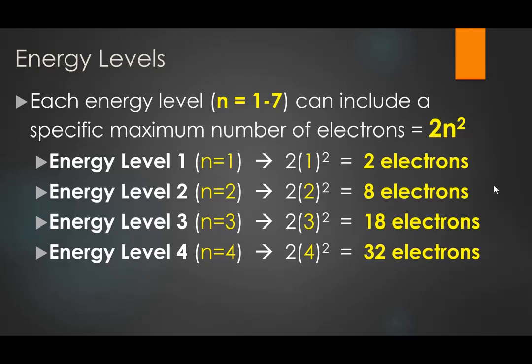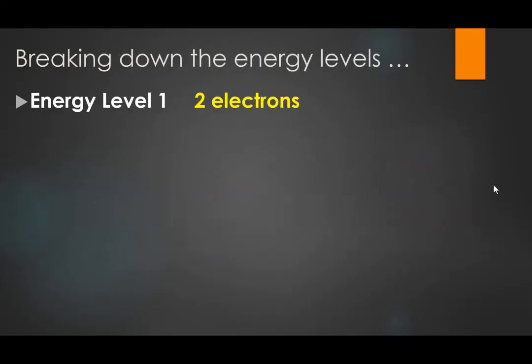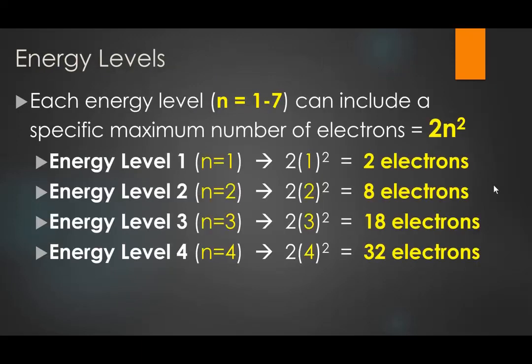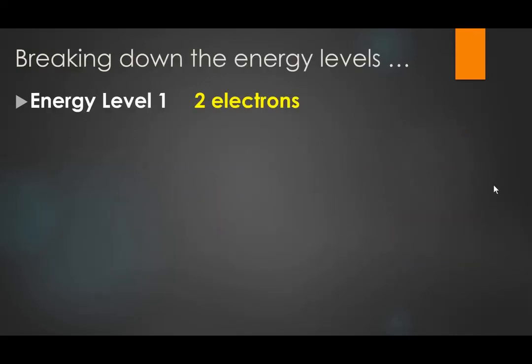It's important to know that in most atoms the energy levels aren't full — they hold something less than their maximum capacity. Very few elements have all energy levels completely maxed out. Usually there are some full energy levels and some that are less than filled, because electrons fill in a predictable way. So what about energy level 1 with 2 electrons? Energy level 1 can hold 2 × 1² = 2 electrons total. Pretty simple.